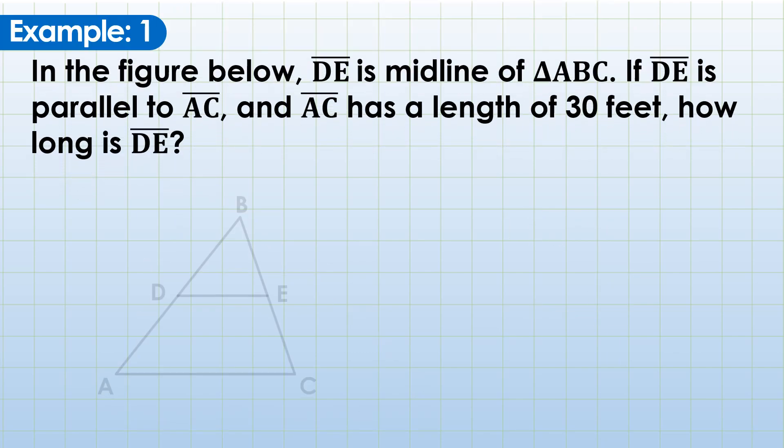In the figure below, DE is midline of triangle ABC. If DE is parallel to AC, and AC has a length of 30 feet, how long is DE? So, we know that DE is midline and AC is the third side, and the relationship is DE is one-half of AC. Mentally, since AC is 30, we can conclude that DE is 15 feet. And that's how you solve it.